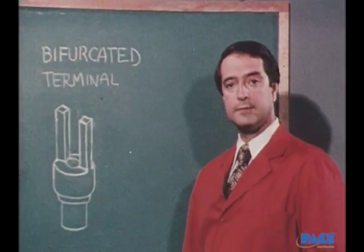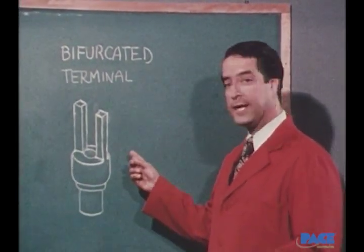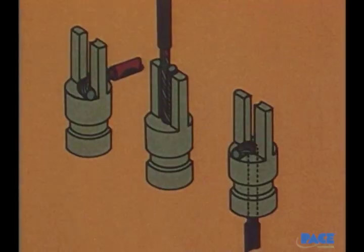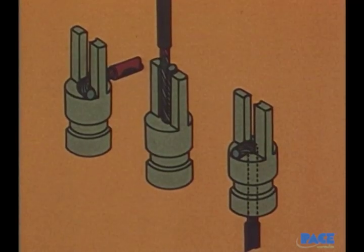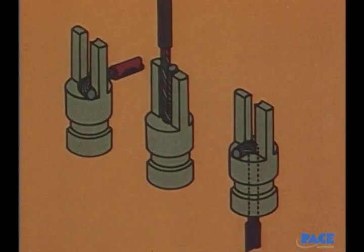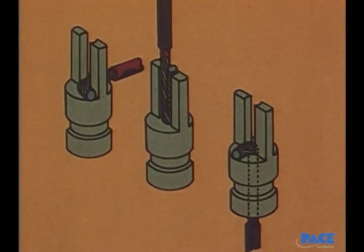We've now looked at two popular types of terminals, and a third is this one: the bifurcated or forked terminal. Wires may enter these terminals in several different ways: from the side, the top, or the bottom, most commonly side.